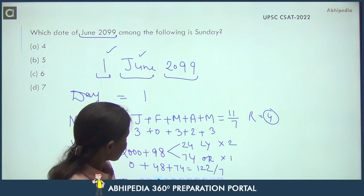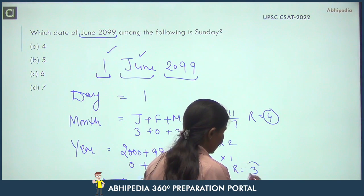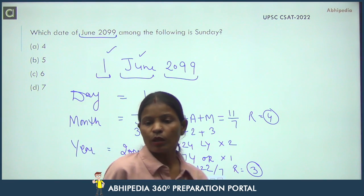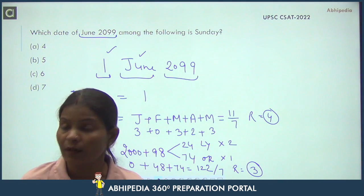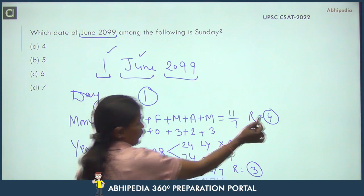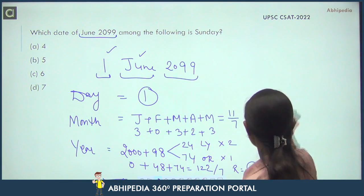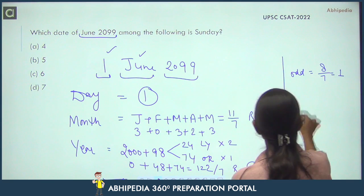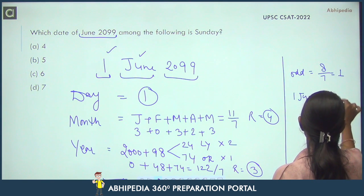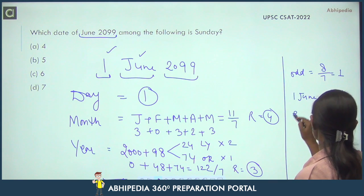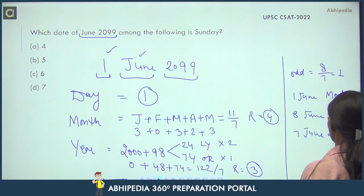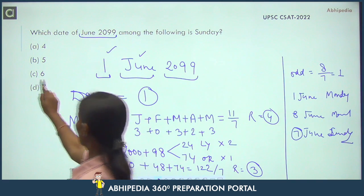Total odd days: date gives 1, months give 4, years give 3. Total = 1+4+3 = 8. Divide 8 by 7, remainder = 1. Remainder 1 represents Monday. So 1st June 2099 is Monday. That means 8th June is also Monday, so 7th June is Sunday. Your answer is 7th June — option D is the correct answer.